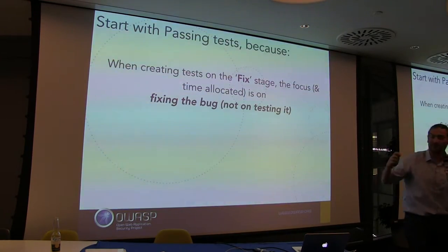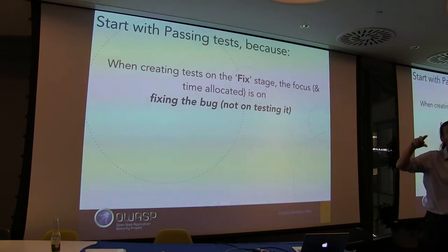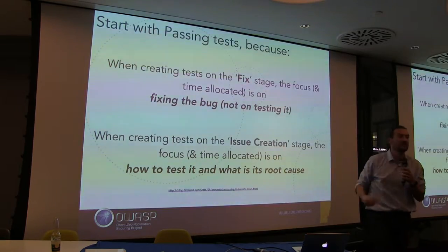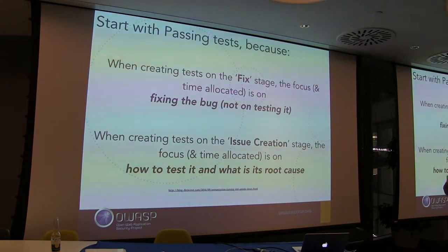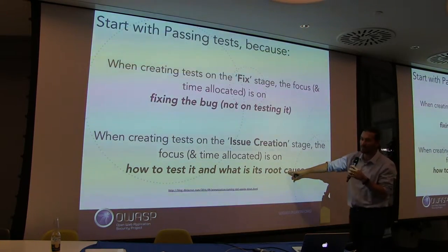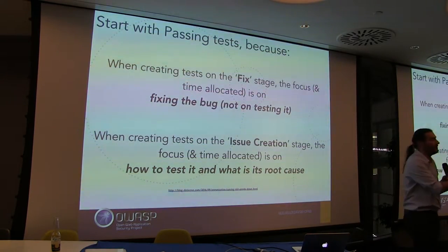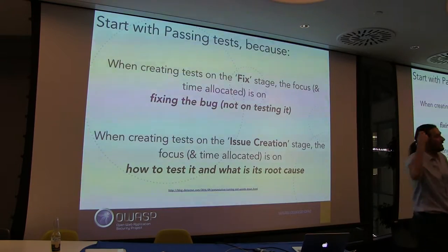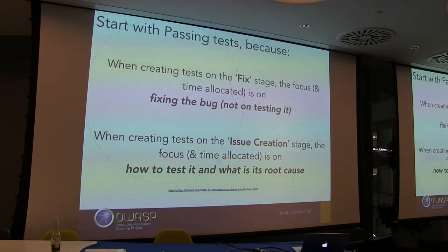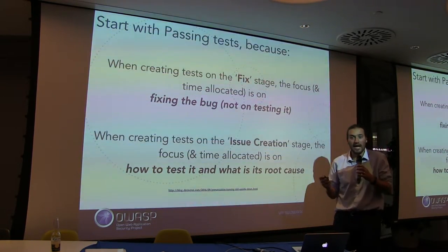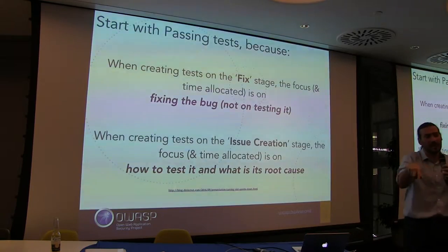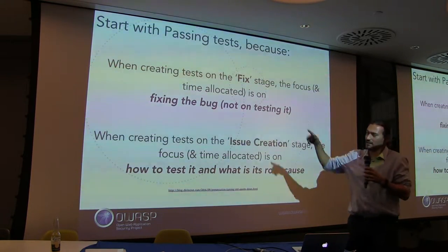There's a really cool concept: when you write a test in the fixed state, you're focused on fixing the bug. When you write the test in the issue creation phase, you actually focus on how to test it and find the root cause. You'll find all sorts of gaps in the test infrastructure. The solution I'm going to give you can only be addressed at this stage. When you're fixing the bug, there's no way you can ask for four more days to improve test infrastructure. But at issue creation you can say: I cannot replicate that bug — we'll have to accept the risk that my fix is a whack-a-mole.